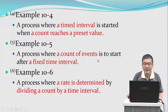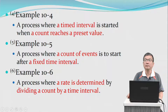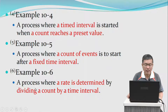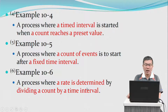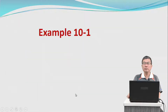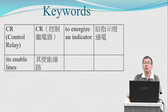Example 5: a process where a count of events is to start after a fixed time interval. Example 6: a process where a rate is determined by dividing a count by a time interval. Now, Example 1 — the keyword is control relay.